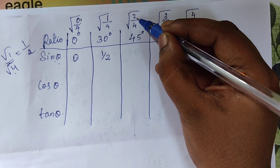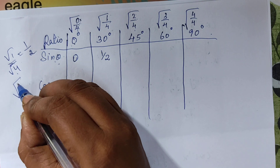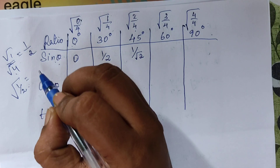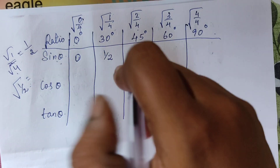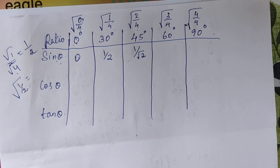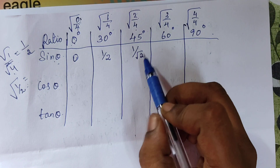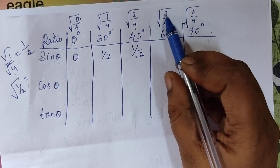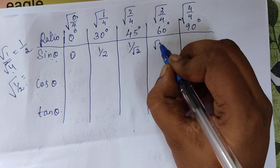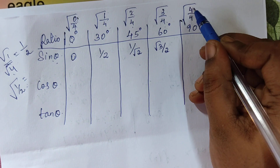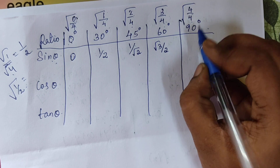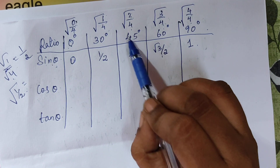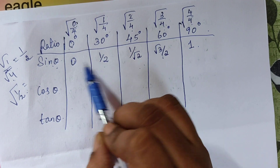For sin 45°, we have the square root of 2/4, which simplifies to square root of one by two, giving one by root two — positive since we are in the first quadrant. For sin 60°, square root of 3/4 gives root three by two. Finally, for sin 90°, square root of 4/4 is square root of one, which is one. So: sin 0°=0, sin 30°=1/2, sin 45°=1/√2, sin 60°=√3/2, sin 90°=1.